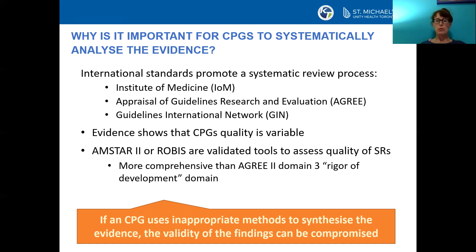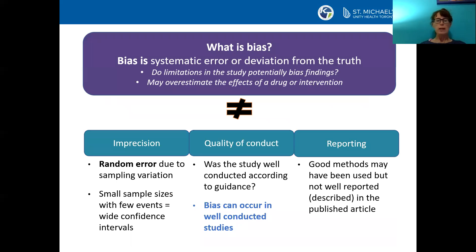If a CPG uses inappropriate methods to synthesize the evidence, the validity of the findings can be compromised and bias can creep in. Bias in research refers to systematic error, meaning that multiple replications of the same study would reach the wrong answer on average. Do limitations in the study potentially bias the findings? Bias may overestimate the effects of a drug or intervention.